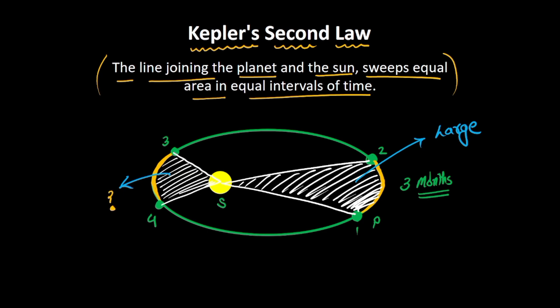So, is Kepler's second law not correct? In this situation, I had assumed that the planet is moving at the same speed throughout the orbit — the same speed in this part and in this part. But is that right? Let's try to find out.